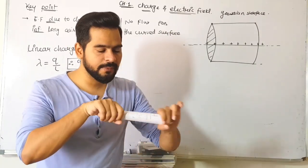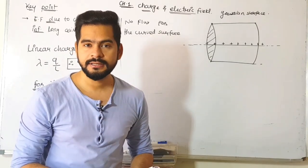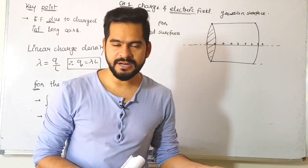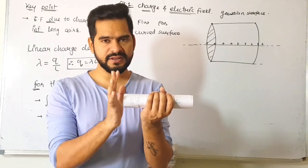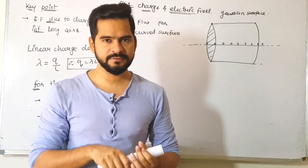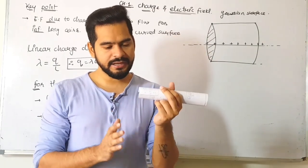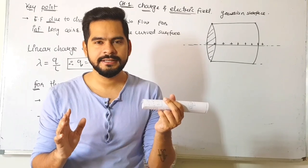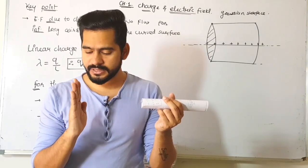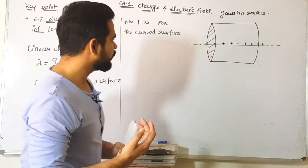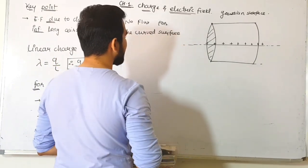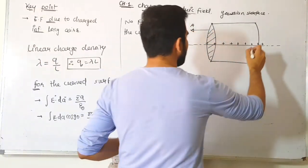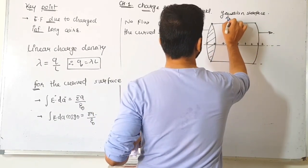The direction of area—remember area is a vector quantity. If you observe each surface, the area vector is perpendicular to that surface. For cross sections, area points left and right. For the curved surface, area points radially outward.